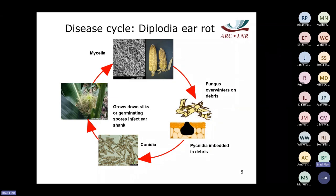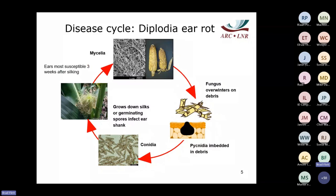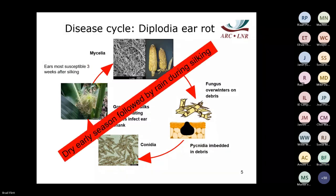Ears are most susceptible three weeks after silking. A dry early season followed by rain provides the environmental conditions needed for Diplodia ear rot to occur. That is how the disease cycle works.